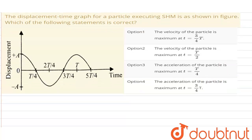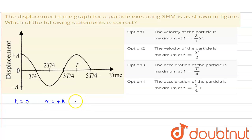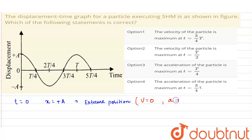From the displacement-time graph, we can see that when t = 0, the displacement is maximum — that is, its amplitude. So the particle is at its extreme position. As we know, at the extreme position, the velocity is 0 and acceleration is maximum.